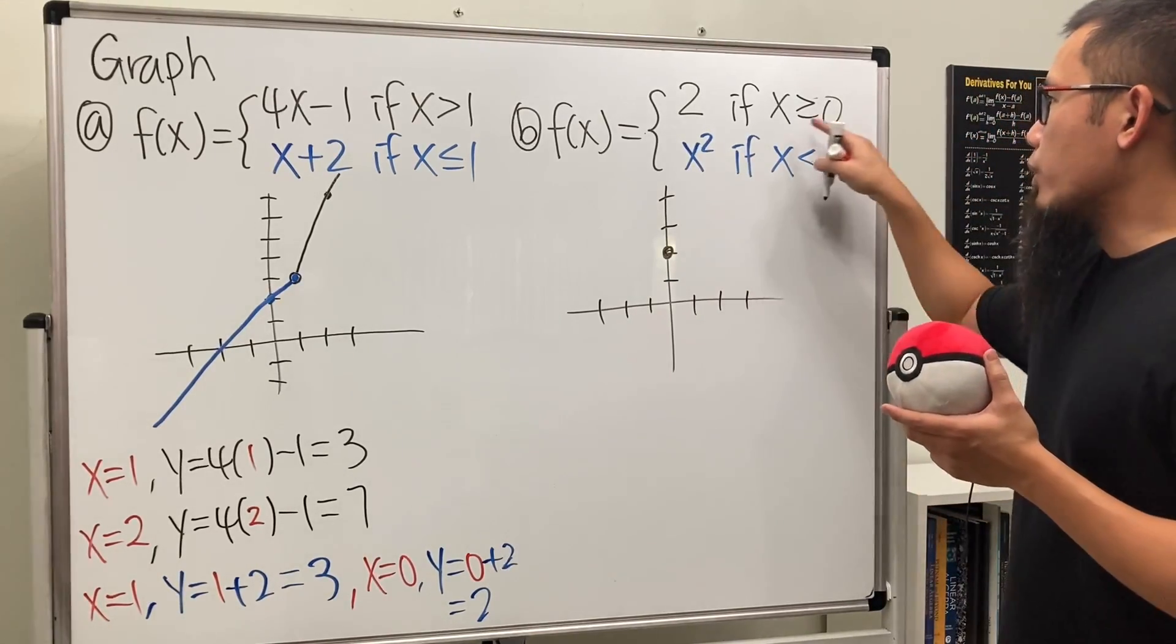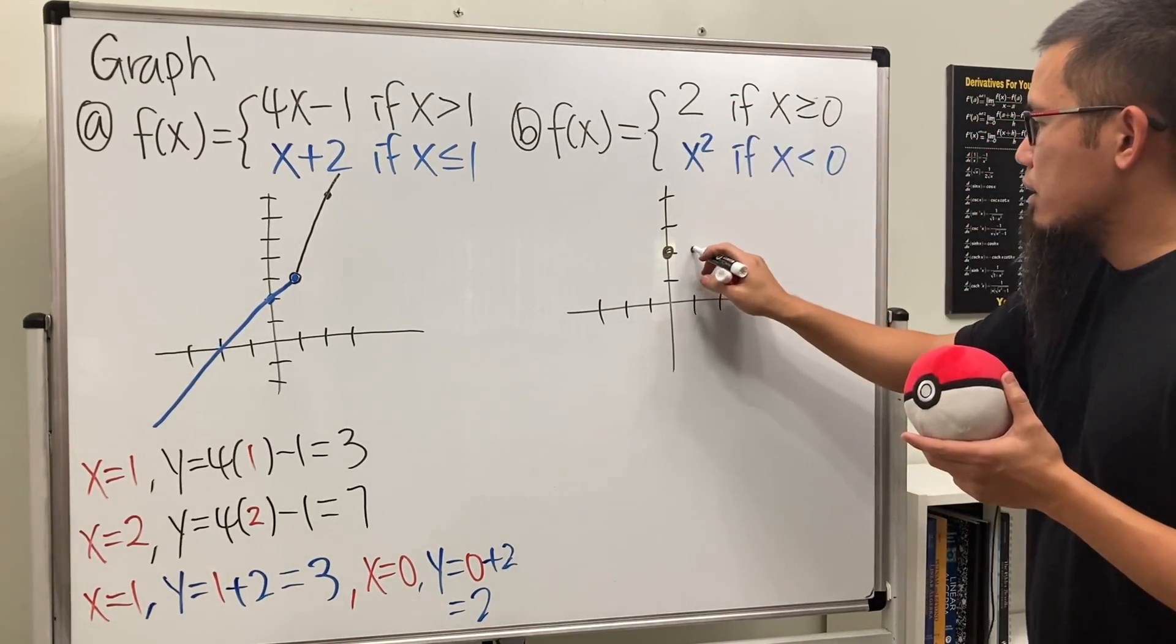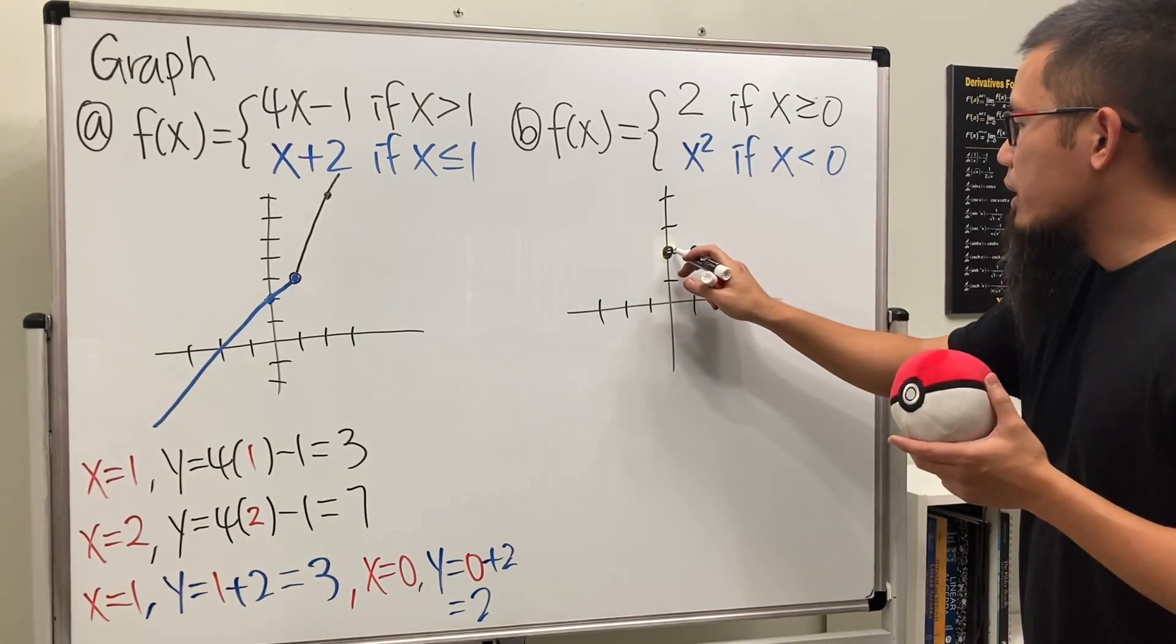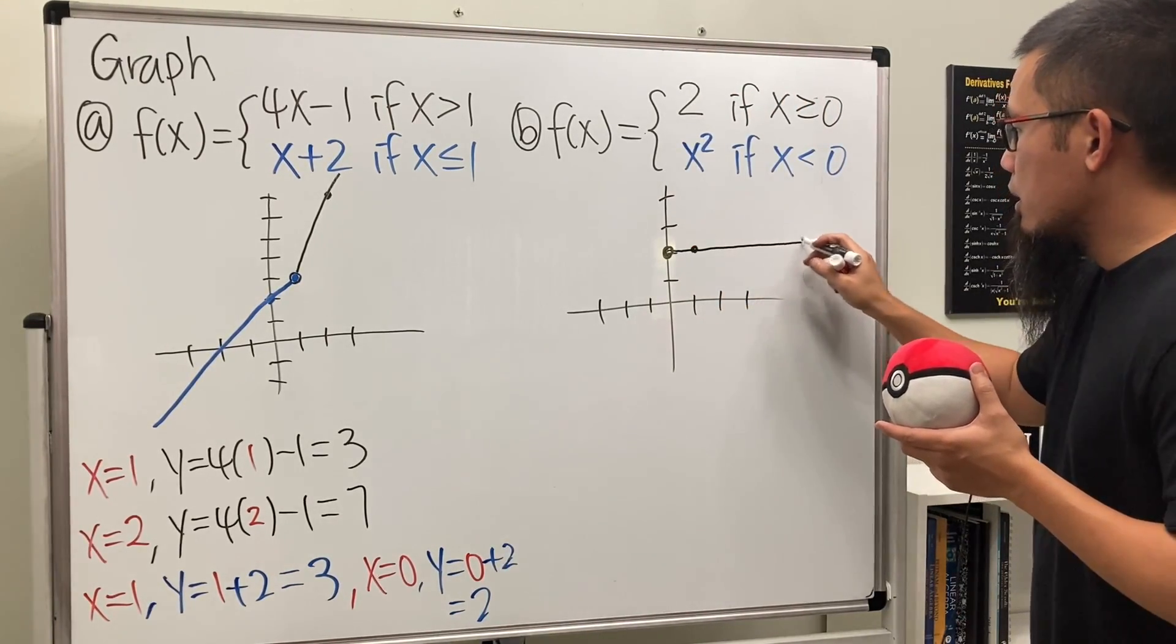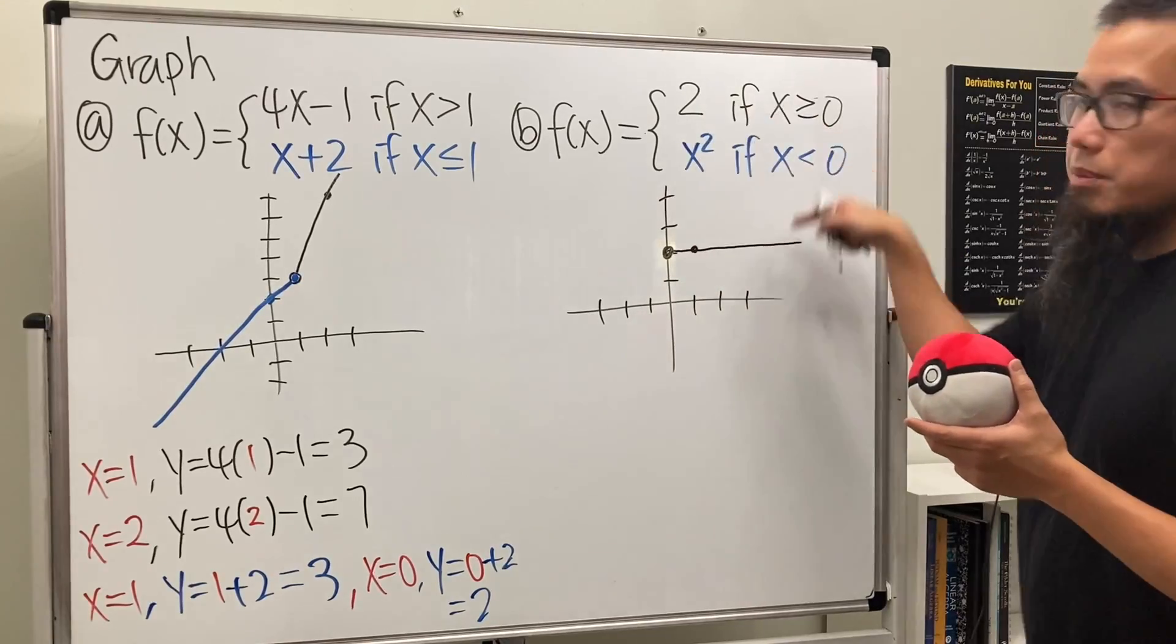And then, of course, when x is 1, you can also put in 2, right? When x is 2, it's also still 2. So that's why we get a horizontal line. But anyway, that's this piece.